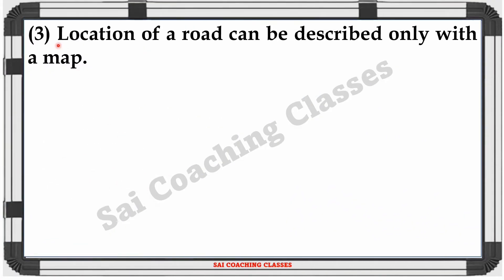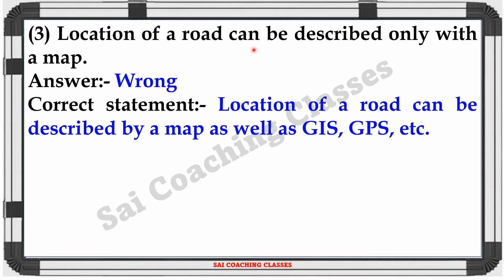Statement 3: Location of a road can be described only with a map. — Answer: Wrong. Correct statement: Location of a road can be described by a map as well as GIS, GPS, etc.